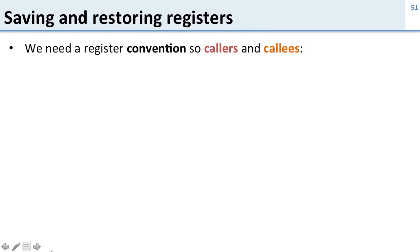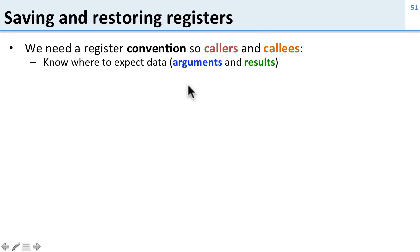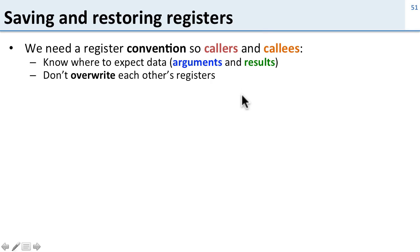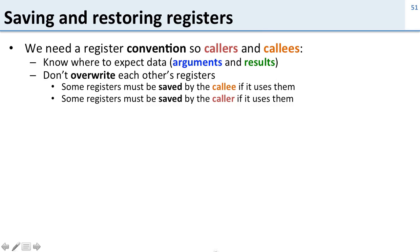We talked about needing a convention between callers and callees, and we covered how we need to know where to expect the arguments and results. We talked about how we could specify particular register files for that. But we also need to make sure we don't overwrite each other's registers, and this is a little bit more tricky. Some of the registers are going to be saved by the callee, and some are saved by the caller — and this is the convention we have.